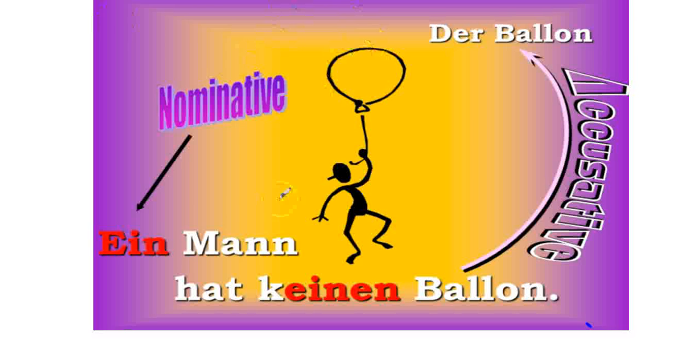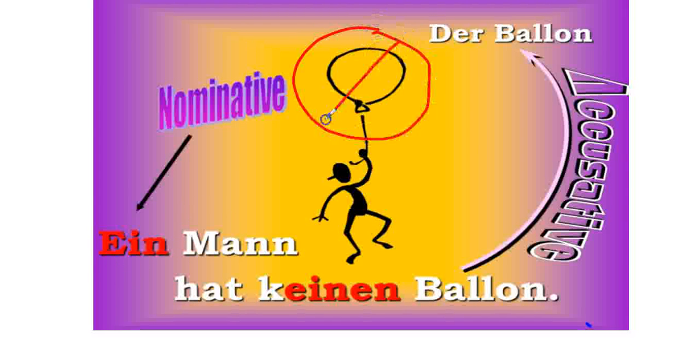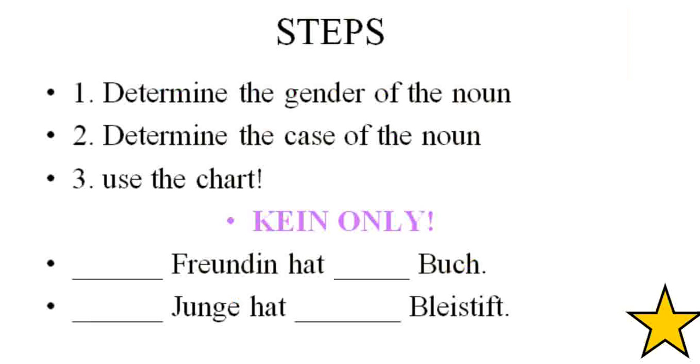If you take a look at this, a man has keinen Balloon, he has no balloon. So the things you want to consider, as always, the first step is you're going to consider the gender of the noun. Is it masculine, feminine, or neuter? Second step, then you're going to decide the case. Is it nominative or accusative? And once you know those elements, you can use the chart.